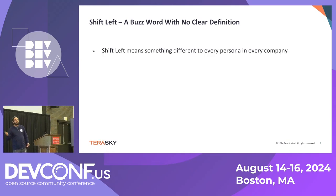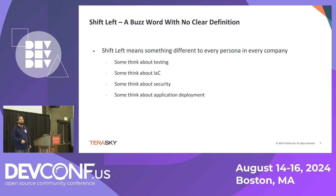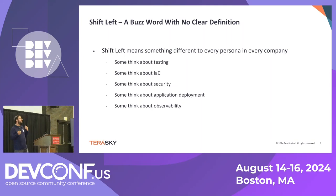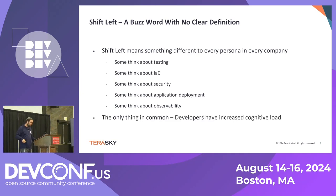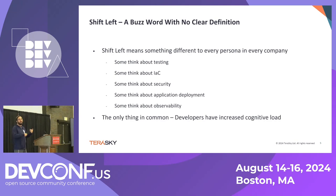Shift left means something different to every persona in every company. It could mean testing, infrastructure as code, security, application deployment, observability, and a million other things. It's a general methodology, but it's not clear what it means, who we're shifting left to, what should be shifted and what shouldn't. The only thing in common is that developers have increased cognitive load — and putting more cognitive load on the people writing the software is an anti-pattern.